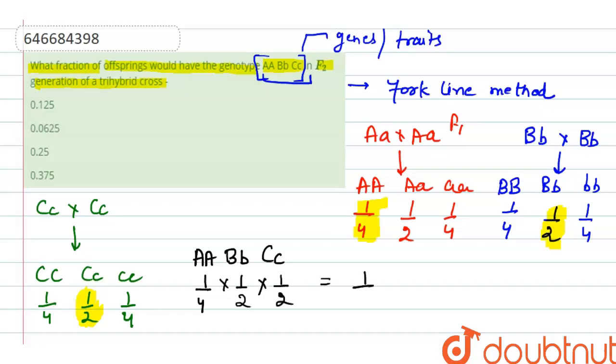So for this trihybrid cross, the desired result will be 1/16, that will result in 0.0625, which equals 6.25% of the total result. Let's move to our options. The first option is 0.125, which is wrong. The second option is 0.0625, which is the correct answer. 0.25 and 0.375 are also wrong.